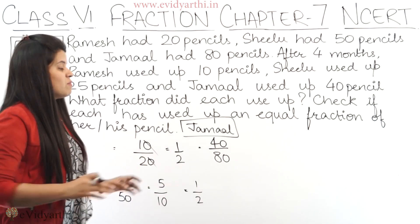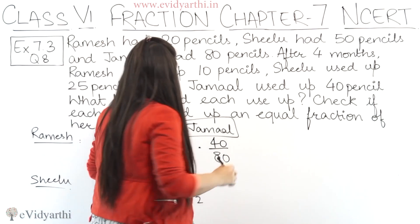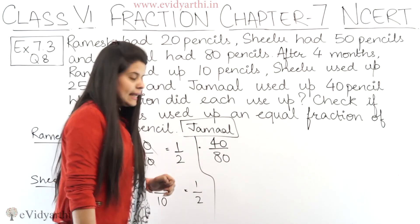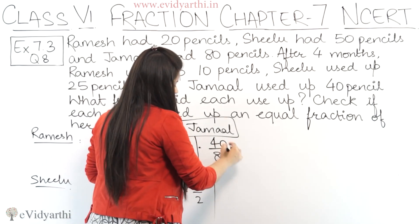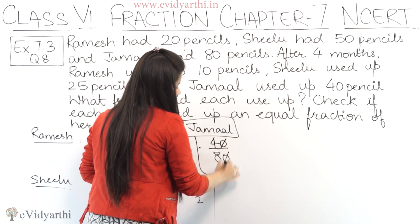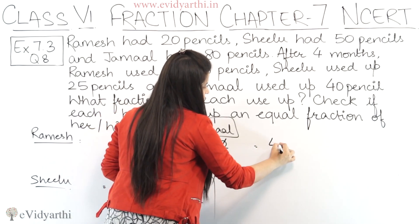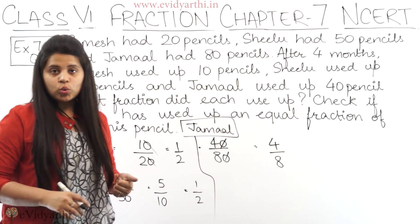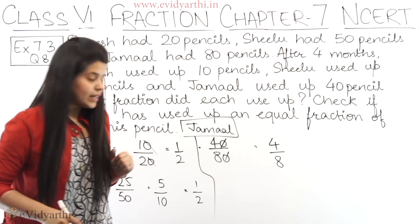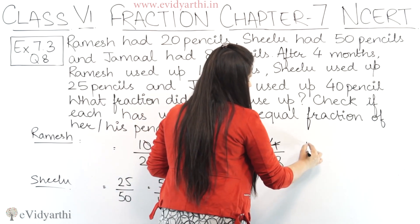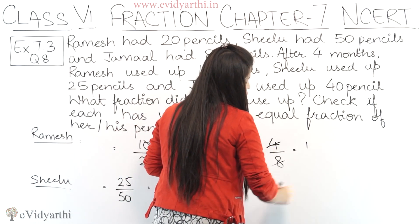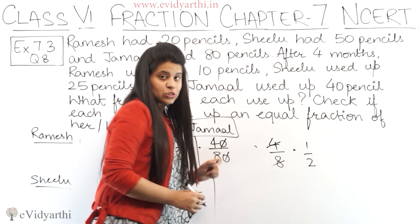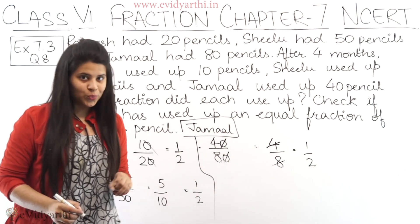Now the last one is Jamal. We have 40 upon 80. Cancelling the zeros from 40 and 80, we are left with 4 upon 8. Both 4 and 8 are in the 4 times table: 4 × 1 = 4 and 4 × 2 = 8. So we get 1 upon 2.